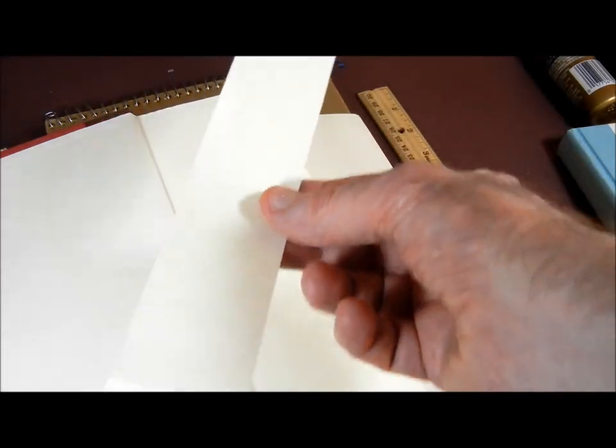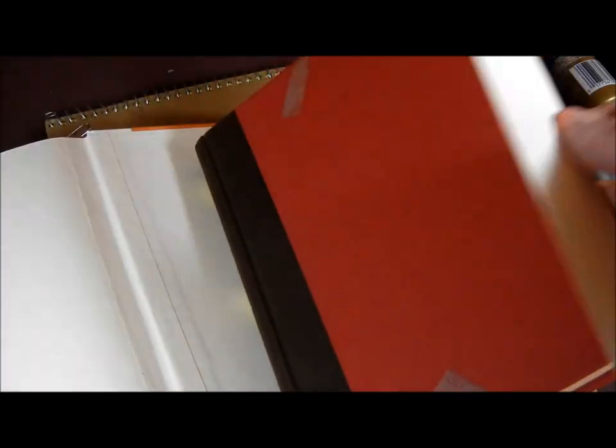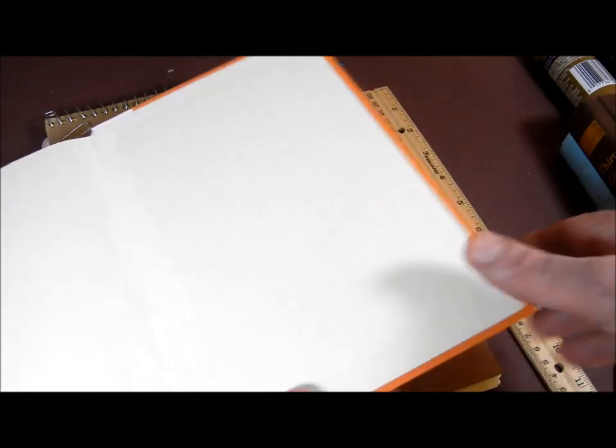After the repair is done there will be a visible seam in the book, so I cover that with a piece of fly leaf paper which I get from a donor book such as this book here. It's cream colored and most books are cream colored. And here's how the seam looks after it's covered.